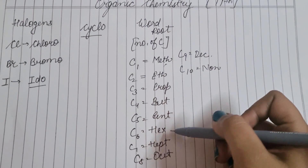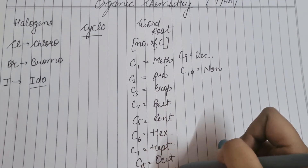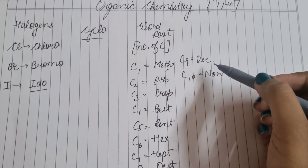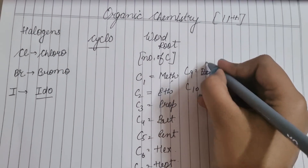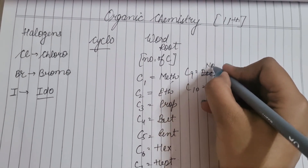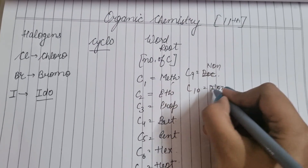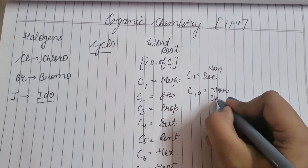تو word root اس طرح سیکھنا ہے: meth، ith، prop، bute، pent، hex، hept، oct، non، اور dec۔